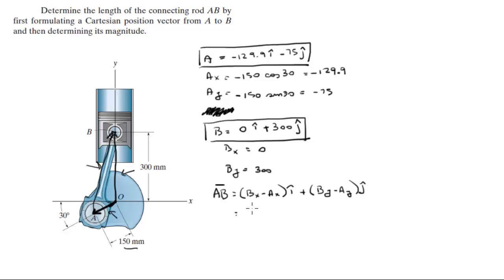BX is zero. AX is negative 129.9, and this is times unit vector I, plus BY is 300 minus negative 75, and this is times unit vector J.